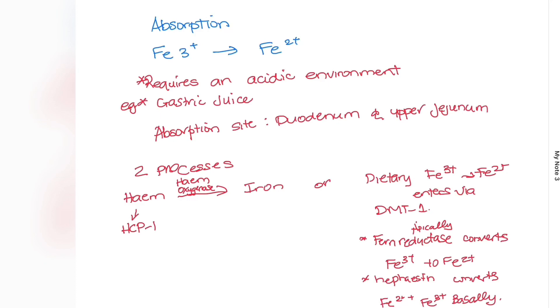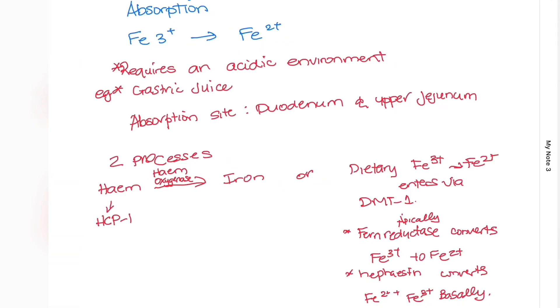The major absorption site for your iron is your duodenum and your upper jejunum. Most of the iron absorption occurs in your duodenum because you will expect that your duodenum will be more acidic than your upper jejunum since it's closer to the stomach. The more acidic, the greater the absorption.